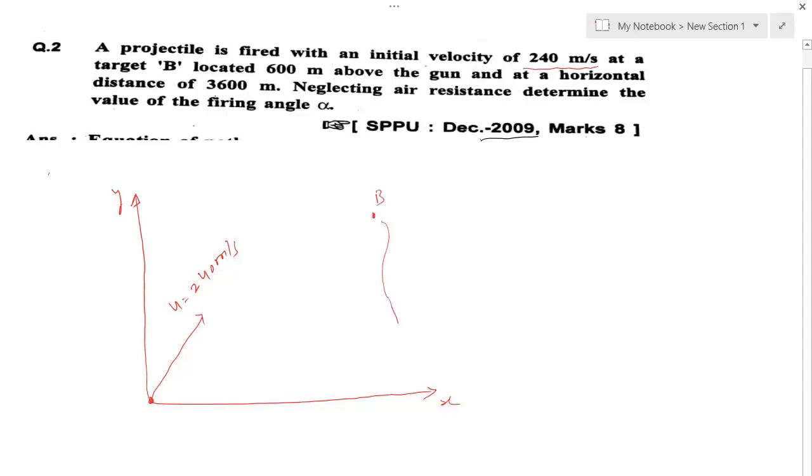This is target B. The vertical distance between them is 600 meters. When I fire this one, it is going to reach this target above the gun at a horizontal distance of 3600 meters. So the horizontal distance between this point B and point A is 3600 meters.